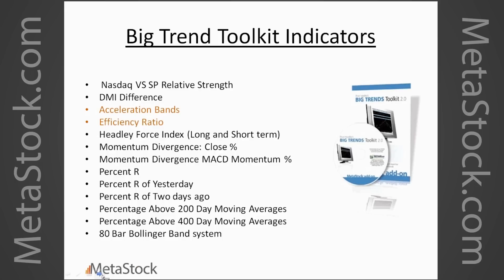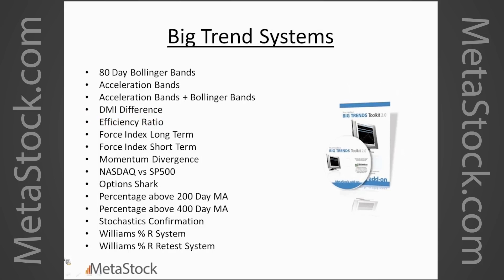Some of the structures he has include relative strength between markets. He really focuses heavily on the Williams Percent R - it's actually one of his favorite indicators - along with acceleration bands and the efficiency ratio, which I'm going to focus on more today. I found that using those in option trading adds a good complementary structure when used together based off the acceleration band signal. The add-on comes with many different aspects, including expert advisors based off those indicators.